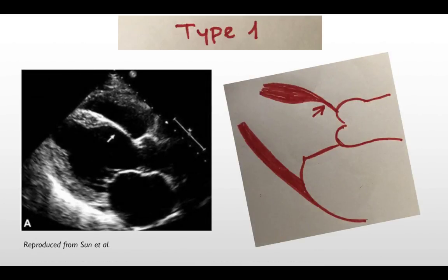In another view, in the left parasternal long axis view, you can see the same finding clearly as thinning of the basal part of the septum. And you can obviously see the difference between the base of the septum and the mid septum, how they look very different in thickness.